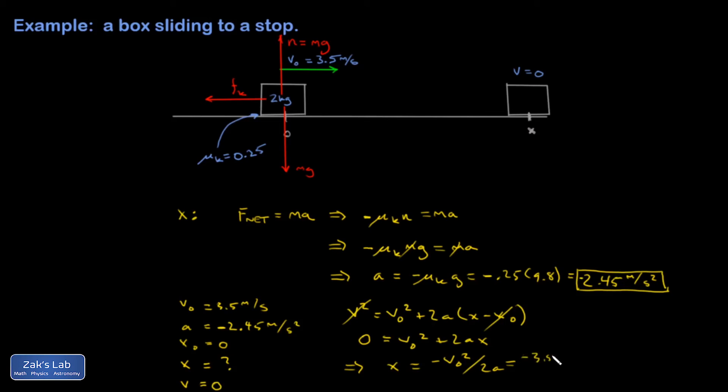x, that's negative 3.5 squared, divided by twice 2.45, with a minus sign on it.